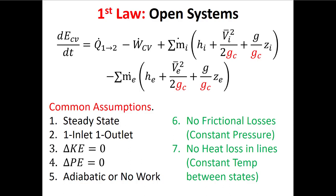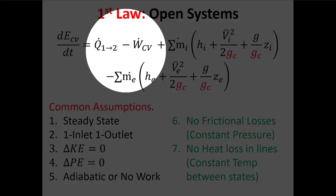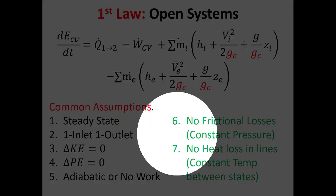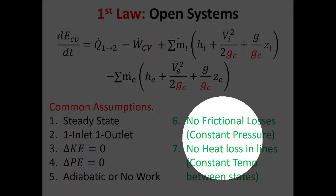The change in kinetic energy can be neglected, and the change in potential energy can be neglected. We'll typically assume processes are simple — either having heat transfer or power but not both, by saying it's adiabatic or passive. And often as we move between processes we'll assume there are no friction losses in pipes or ducts, and no heat losses in the lines. There might be one homework question where you don't make these last two assumptions.